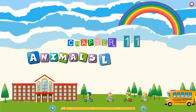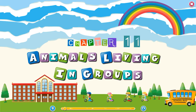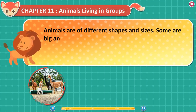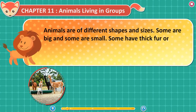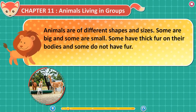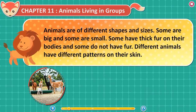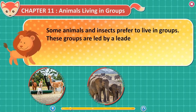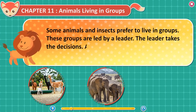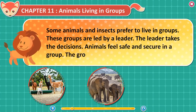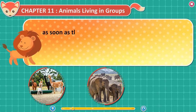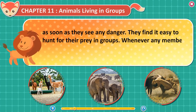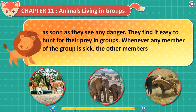Chapter 11: Animals Living in Groups. Animals are of different shapes and sizes. Some are big and some are small. Some have thick fur on their bodies and some do not. Different animals have different patterns on their skin. Some animals and insects prefer to live in groups. These groups are led by a leader who takes the decisions. Animals feel safe and secure in a group. The group members alert each other as soon as they see any danger and find it easy to hunt for their prey in groups. Whenever any member of the group is sick, the other members help him or her.